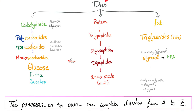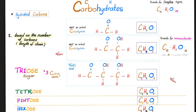Recall that your diet is made of carbohydrates, proteins, and fat. The big carbs are called polysaccharides. When you break them down, you have disaccharides. A disaccharide is made of two monosaccharides.